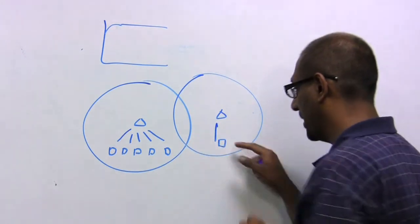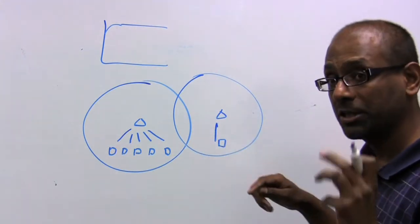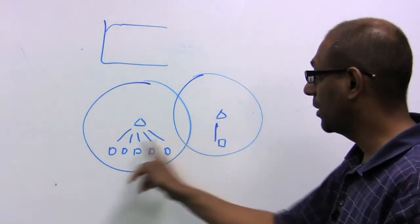And let's say this access point has only one device, it might advertise very low contention parameters, and it will effectively take over the channel and kill all of these guys.